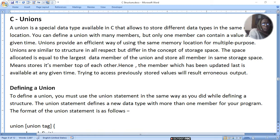We are going to talk about unions. Yesterday we told about the structure. It is a different concept. A union is a special data type available in C that allows storing different data types in the same location.